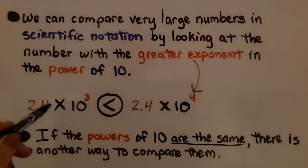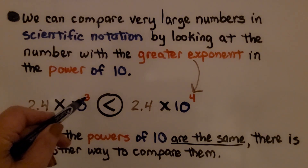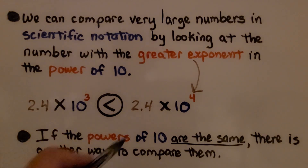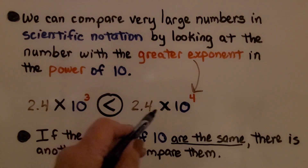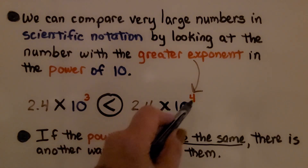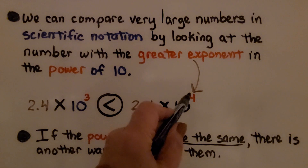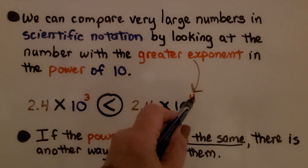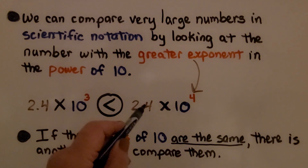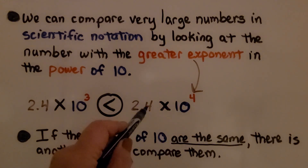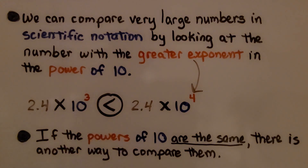We have 2 and 4 tenths times 10 to the third power and 2 and 4 tenths times 10 to the fourth power. This has a greater exponent in the power of 10, so we know this is the greater scientific notation. Now, if the powers of 10 are the same, there's another way to compare them.